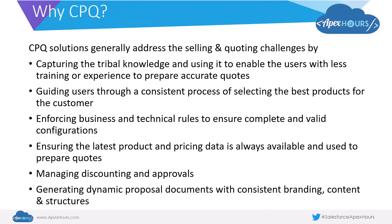This is where CPQ comes into play. CPQ solutions generally address the selling and quoting challenges by capturing tribal knowledge and using it to enable users with less training or experience to prepare accurate quotes. CPQ systems also help guide users through a consistent process of selecting the best products for the customer, and with functions like AI, we can understand customer preferences and buying patterns more easily. CPQ systems help enforce business and technical rules to ensure complete and valid configurations, ensure the latest product and pricing data is always used, manage discounting and approvals efficiently, and generate dynamic proposal documents with consistent branding, content, and structure.